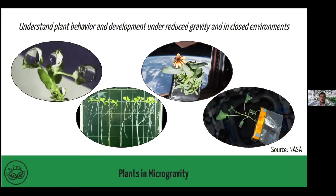A lot of these studies have been conducted to understand plant behavior and development under reduced gravity and in closed environments. Here are some pictures showing the dynamic of water in the space environment, the root orientation of crops under gravity and microgravity, and other studies — including the zinnia flower, cultivated as an ornamental plant in space, and other studies conducted by NASA and other space agencies.